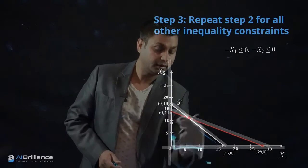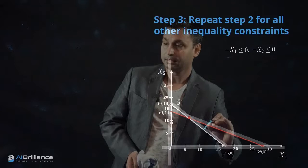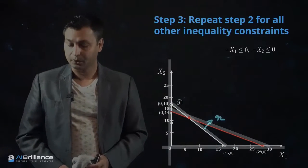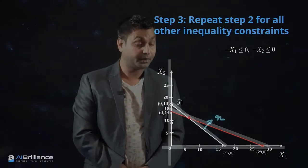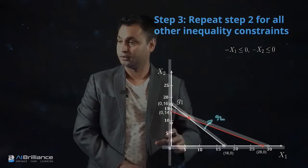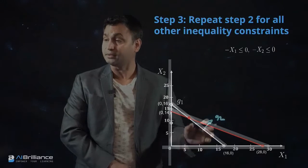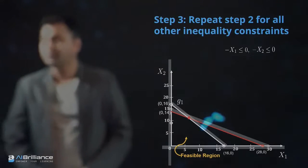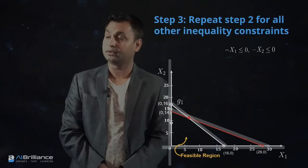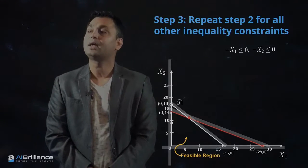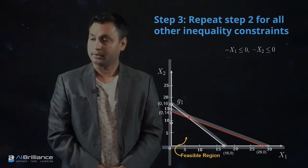The feasible region is demarcated by the boundaries of X1, X2, and the G1 and G2 lines — where G1 is the white line and G2 is the red line. This graphical plotting of all four inequality constraints shows that the enclosed region is feasible, and anything outside it is infeasible. The most important step is plotting all inequality constraints to identify this feasible region.